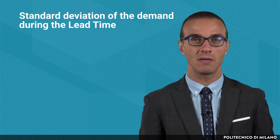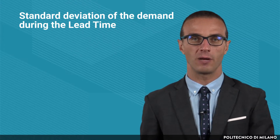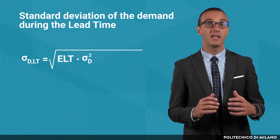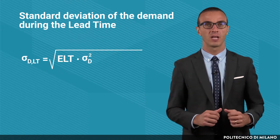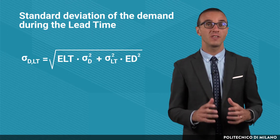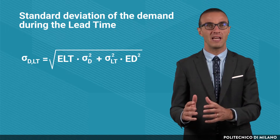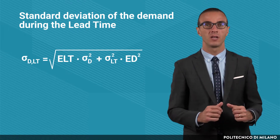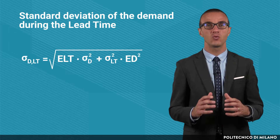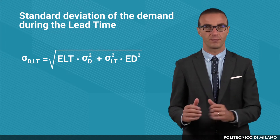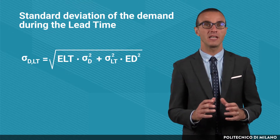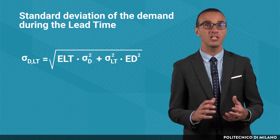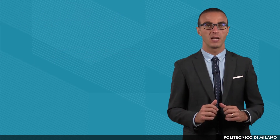Assuming that the demand and the lead time are independent and normally distributed, we can compute the value of the standard deviation of the demand during the lead time as shown in this formula. Its factors are the average value and the standard deviation of the lead time, and the average value and the standard deviation of the demand in the time period — which could be day, week, or month. This means, for example, that if the demand is weekly, the lead time has to be in weeks. The standard deviation of the demand during the lead time is then found by combining the variability of the demand with the variability of the lead time.